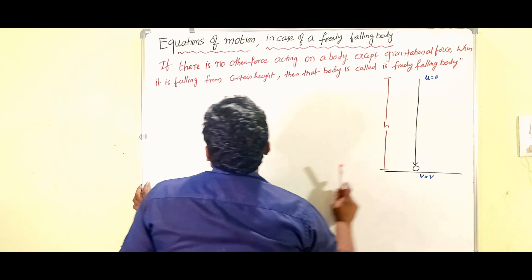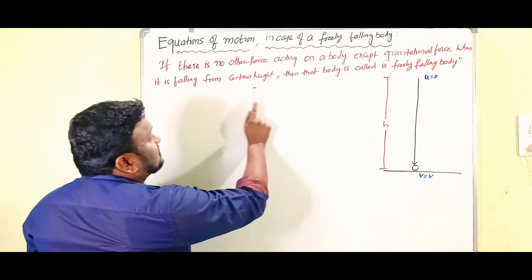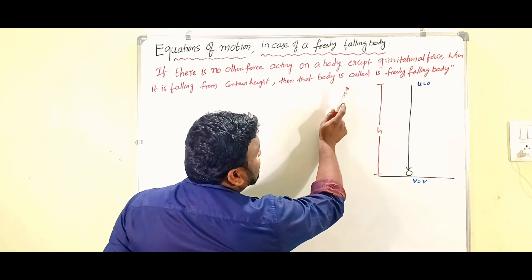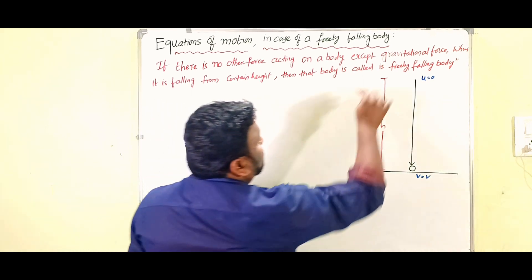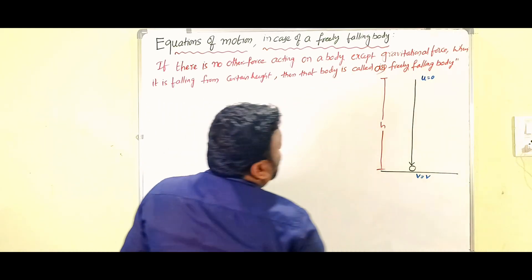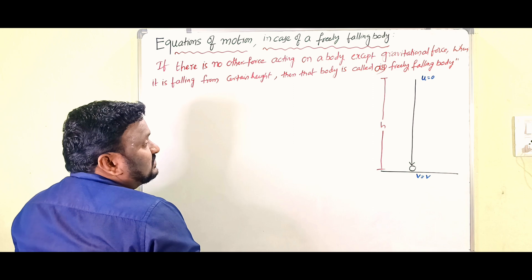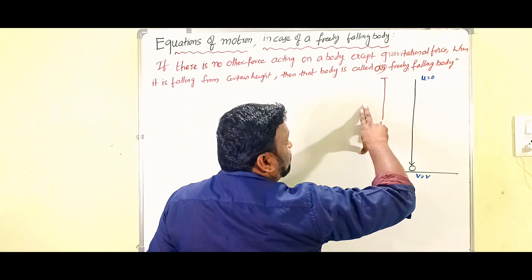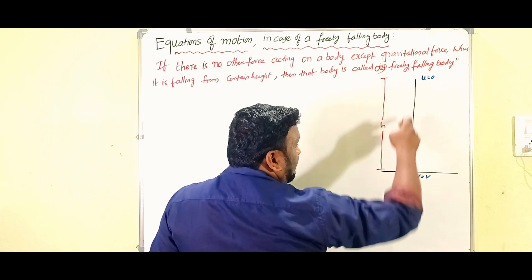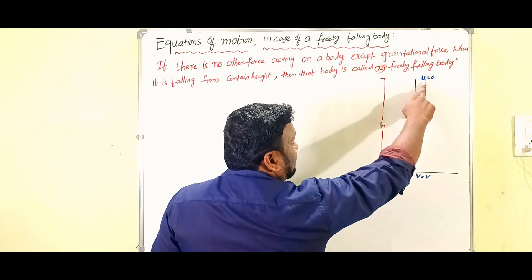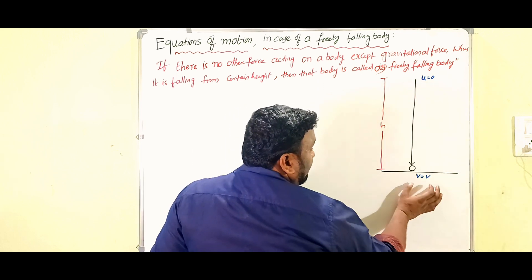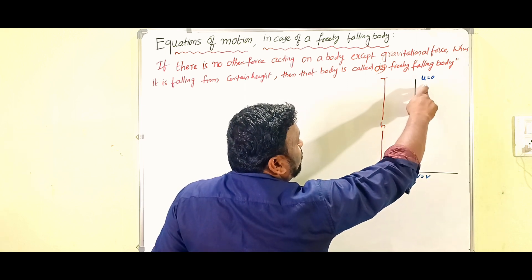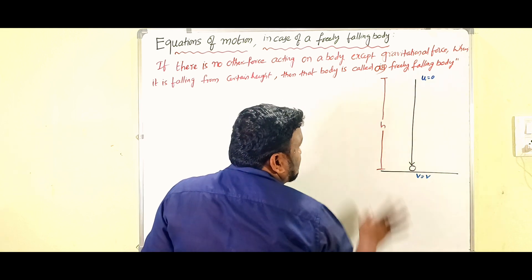No force is acting on the body except gravitational force when it is falling from a certain height — then the body is called a freely falling body. So it is falling from height h. In that case, u is equal to 0 and v is equal to v. For a freely falling body, the initial velocity is 0 — we have to remember that.